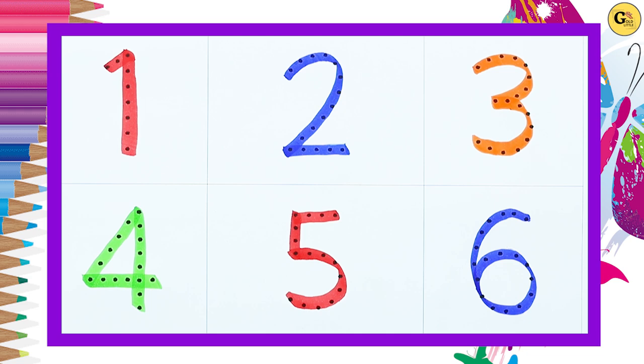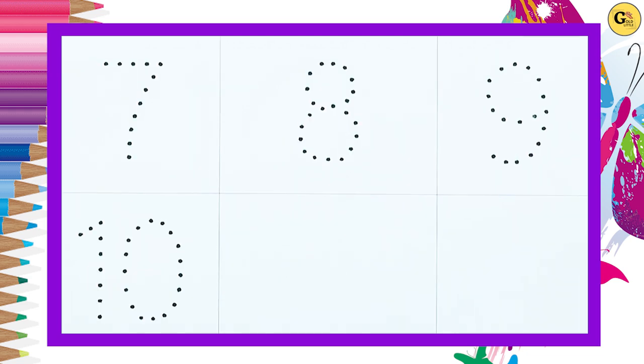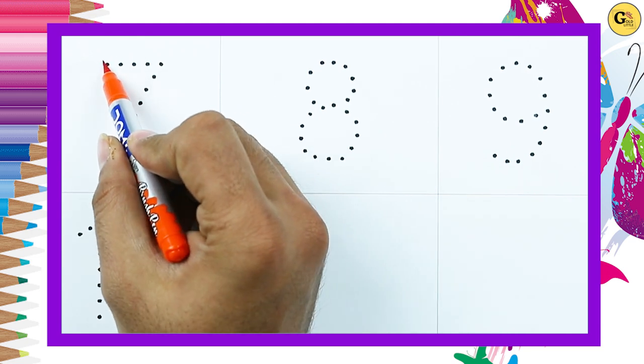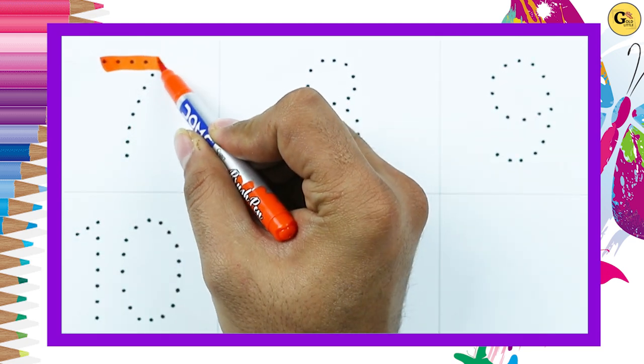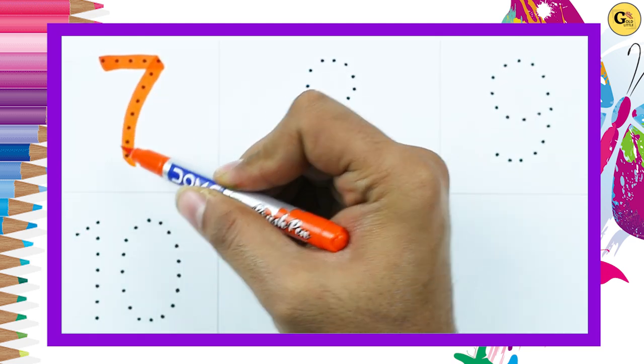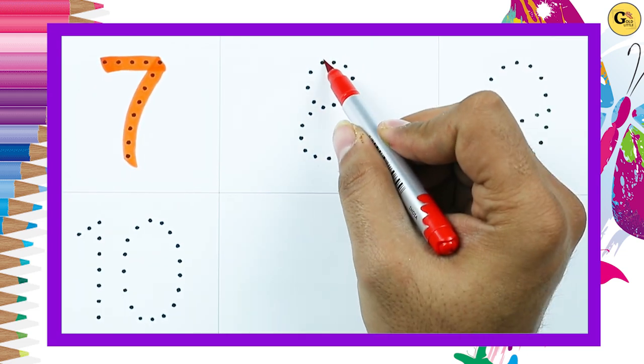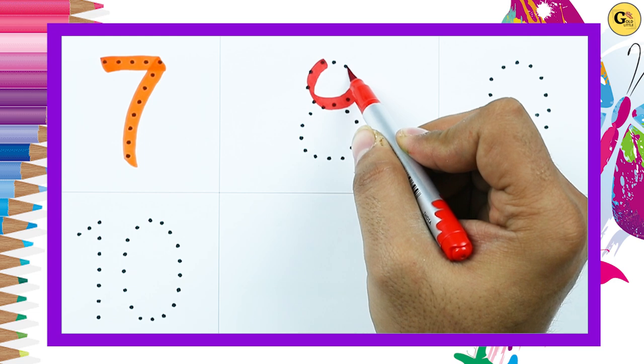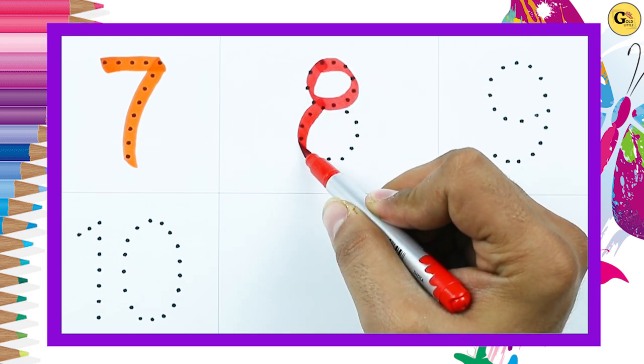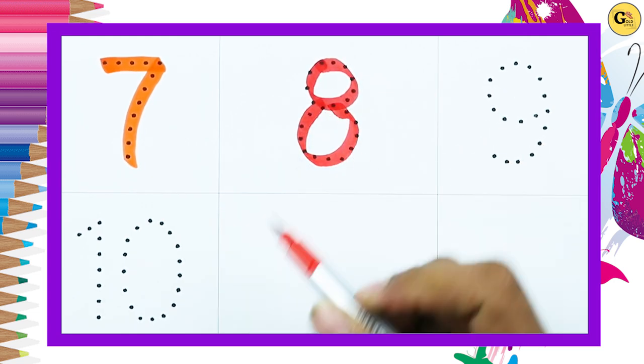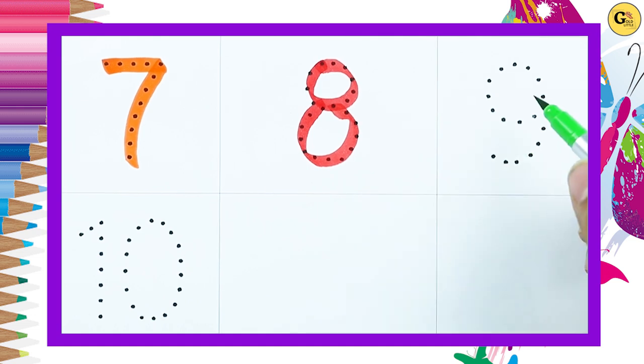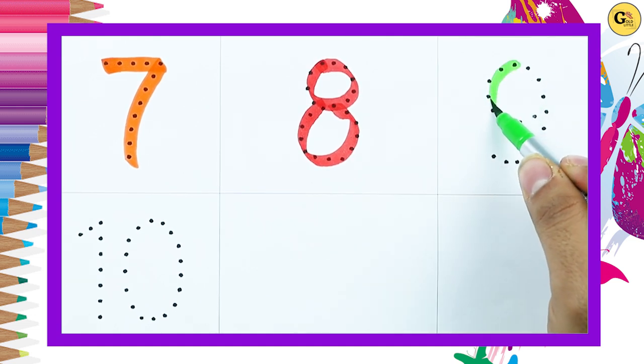Number 7 with orange color. It's number 7. Number 8 with red color. It's number 8, number 9.